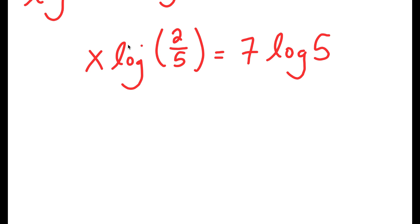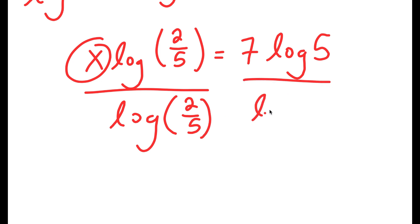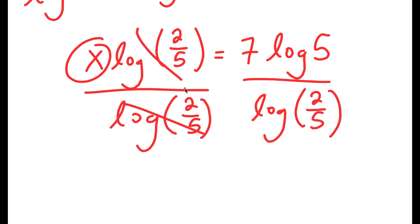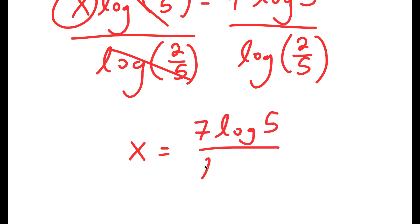Now from here, we obviously want to find the value of x, so to do that we have to get rid of log(2/5) by dividing both sides by log(2/5). These two cancel out and I get x is equal to 7 times log 5 over log(2/5).